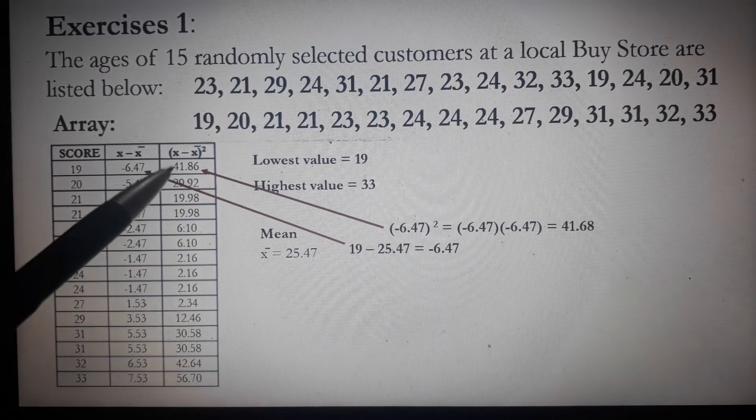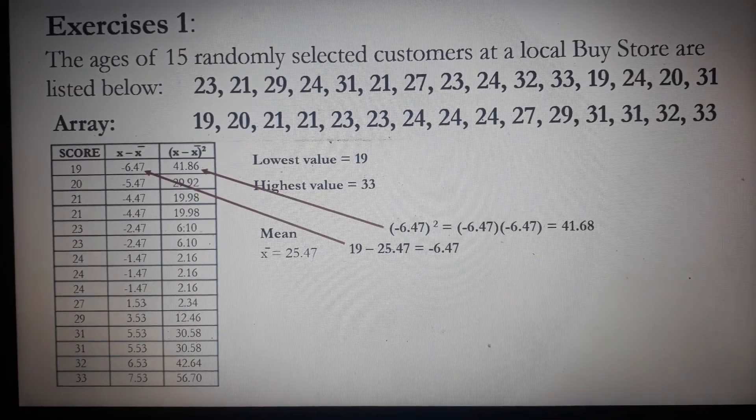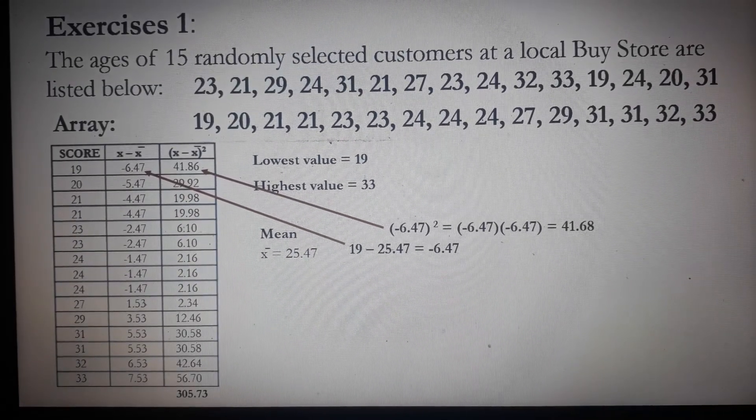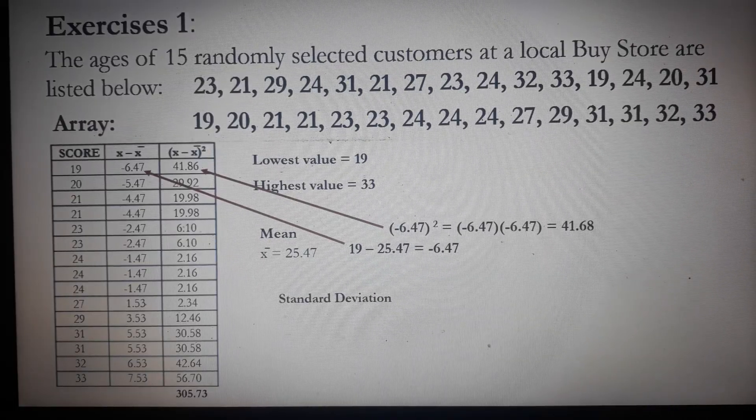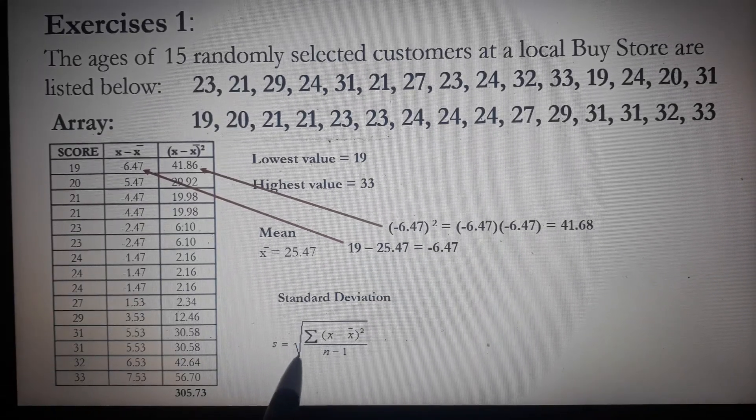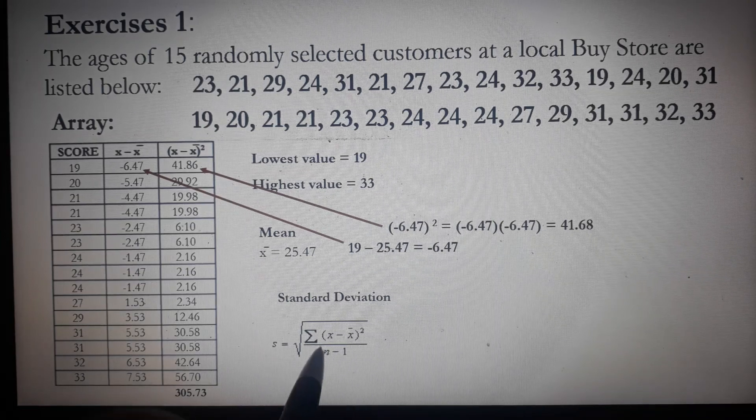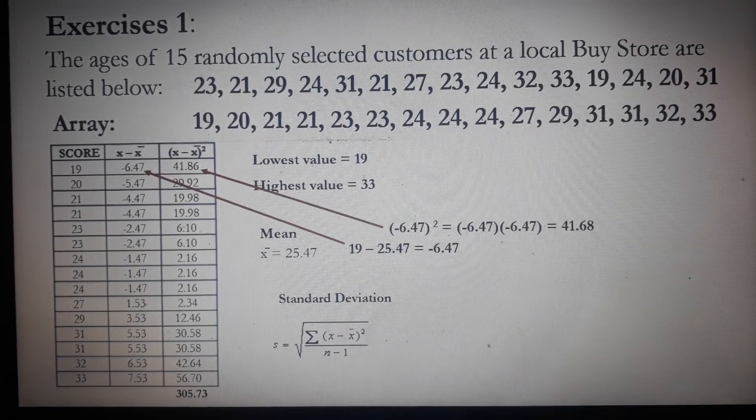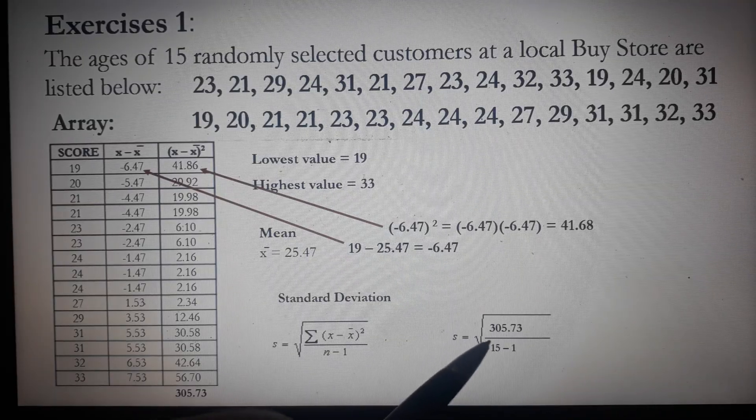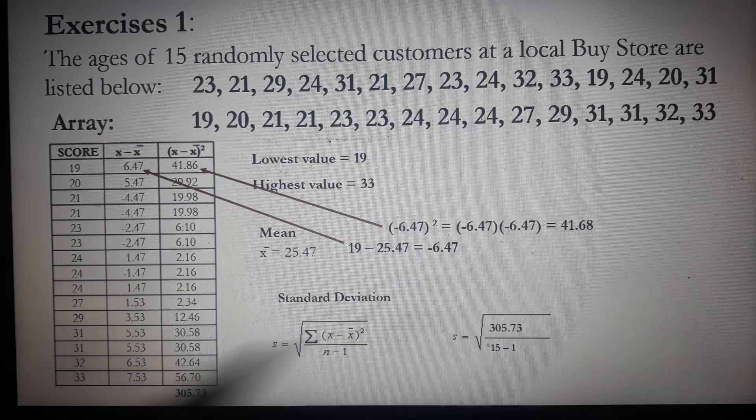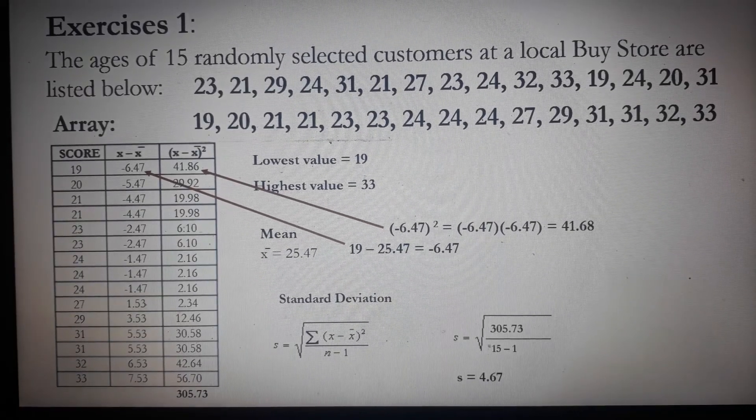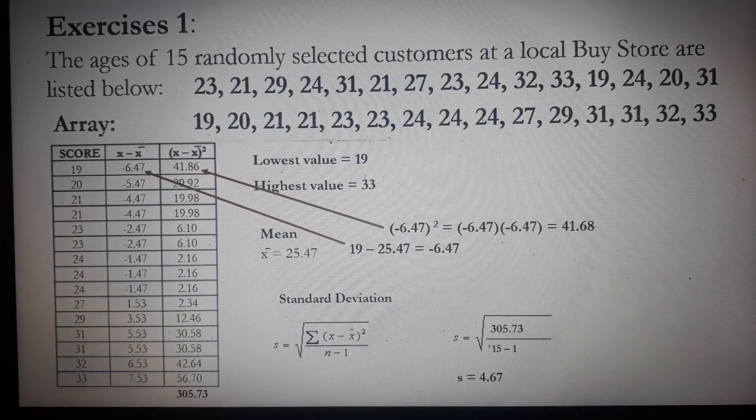Then, add all the numbers in the last column. The result corresponds to the sum of the X minus mean squared. We can now solve for the standard deviation. The equation reads: standard deviation equals the square root of the summation of X minus mean squared divided by N minus 1. By substitution, standard deviation equals the square root of 305.73 divided by 14. The result is 4.67.